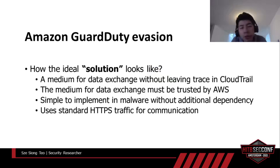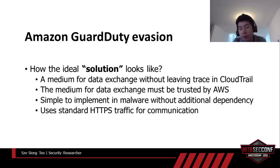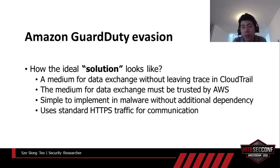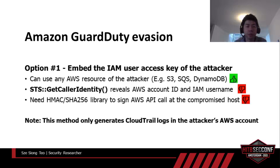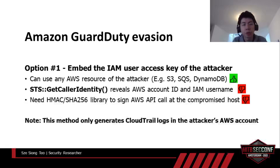So what do we need to establish a C&C channel while making sure GuardDuty is happy? We need a medium for data exchange between the malware and C&C server that doesn't require AWS API, that is trusted by AWS to pass GuardDuty's check, is simple enough without extra crypto libraries for authentication, and uses HTTPS protocol to blend in like a usual REST API call. There are many options to evade GuardDuty, but due to time constraints I'll show three ways.